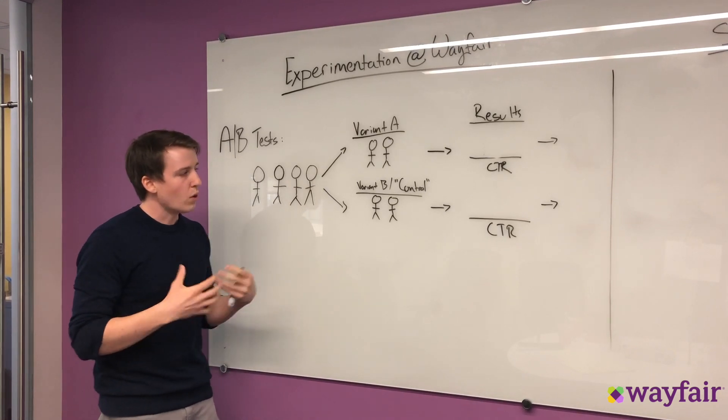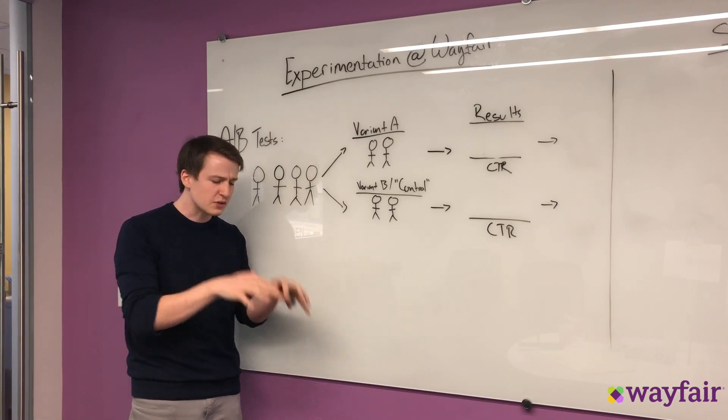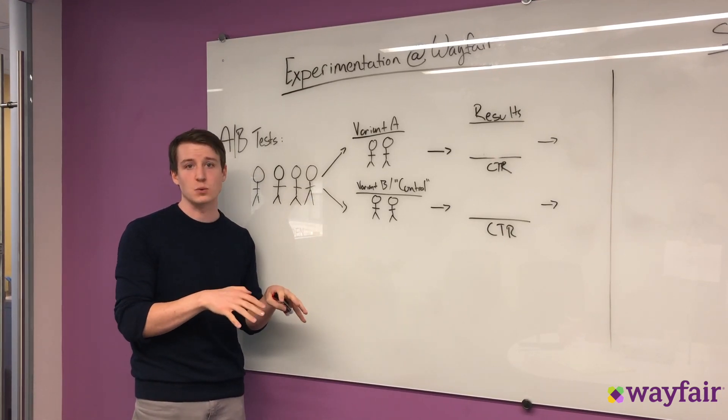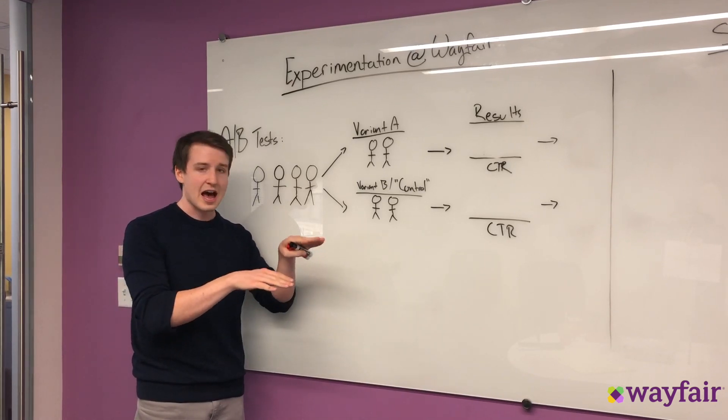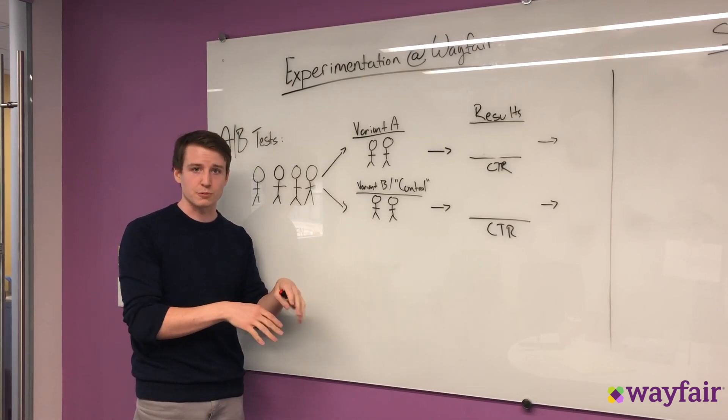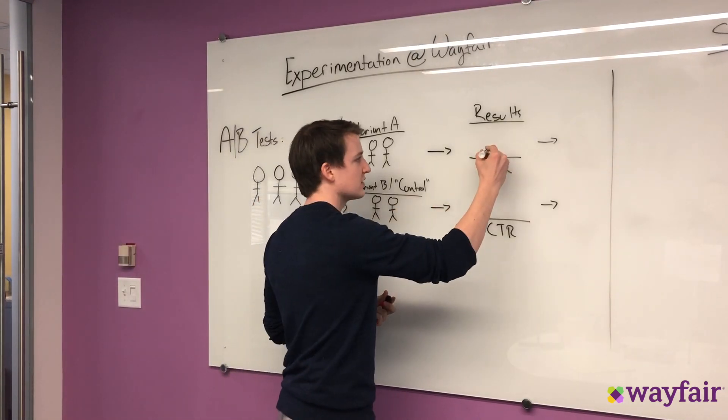And one thing that's really nice about A/B tests is that they are happening at the same time. And so since they're happening at the same time, you don't really have to worry too much about confounding variables because they're going to be having an equal effect on both of the groups.